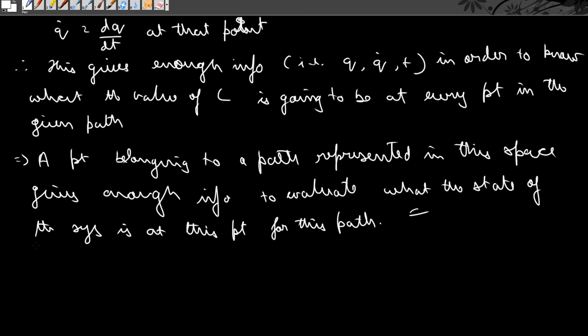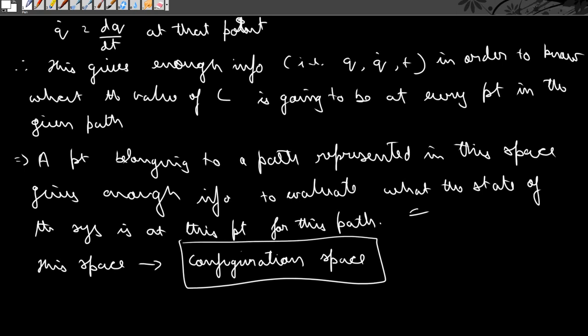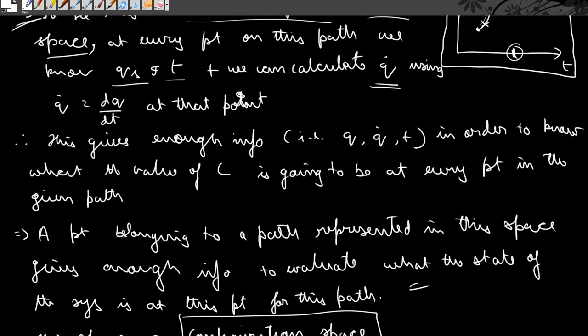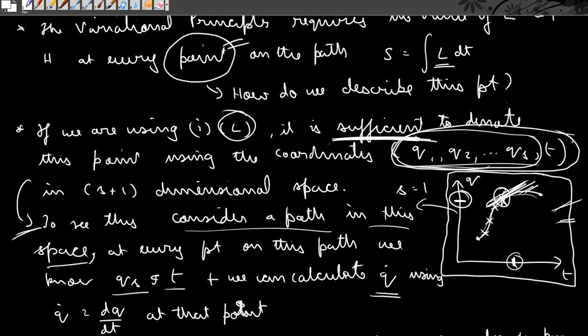So this space that we have described, which consists of the generalized coordinates and time alone, is called the configuration space. Therefore, if we are using the Lagrangian formulation, it is enough to represent the system in configuration space in order to calculate the Lagrangian at every point on a given path and find the value of the action — from which we can predict which is the correct path taken by the system.